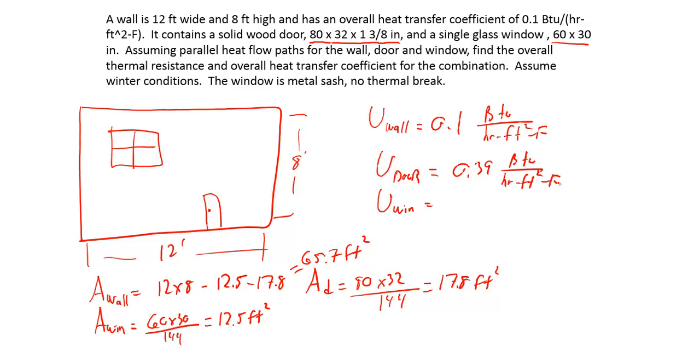The door is 1-3/8, that's the top portion of the table. You look for 1-3/8 inch thick solid wood door, you should find the third selection down, no storm door, it gives you 0.39.